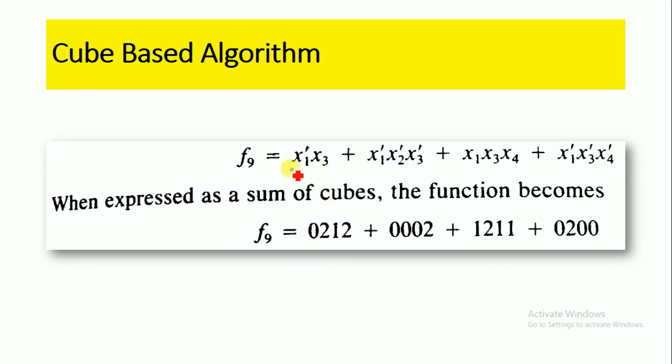When representing a minterm in cubical form, the eliminated variable can be represented as 2. For example, here x1' is 0 and x3 is 1, and there are no x2 and x4 terms, so we represent the eliminated variable terms as 2 and 2.